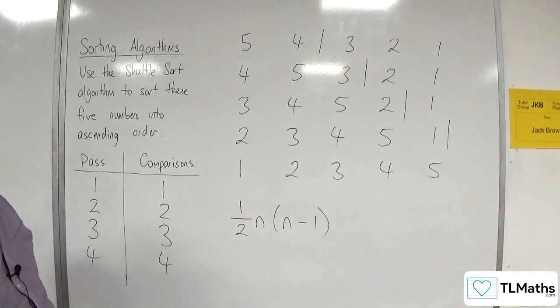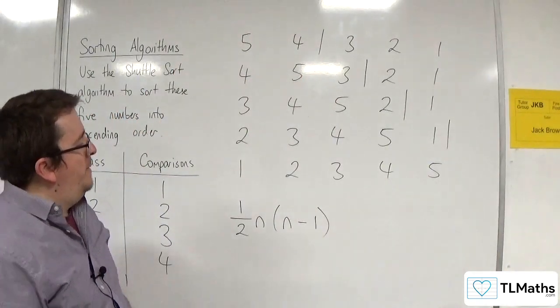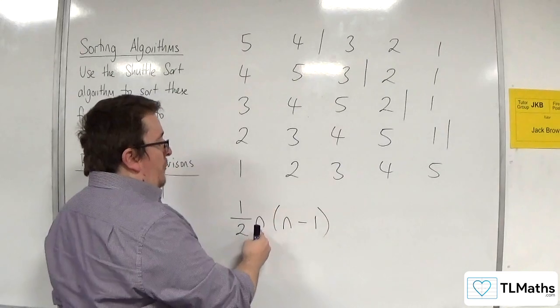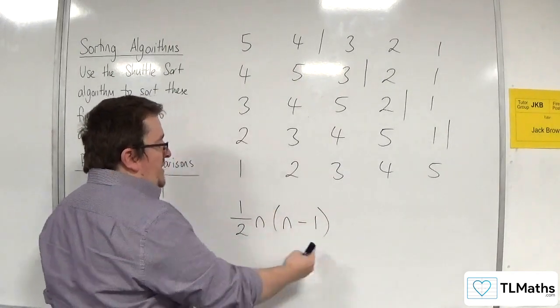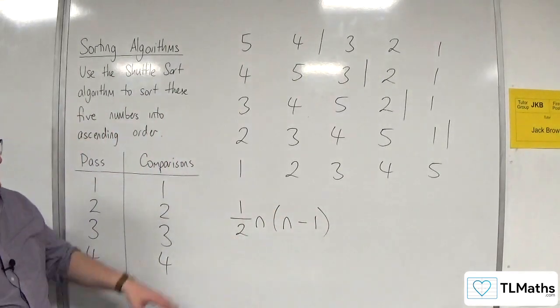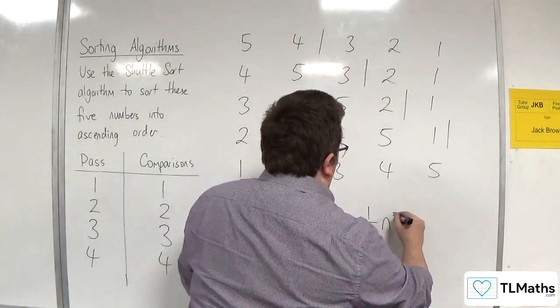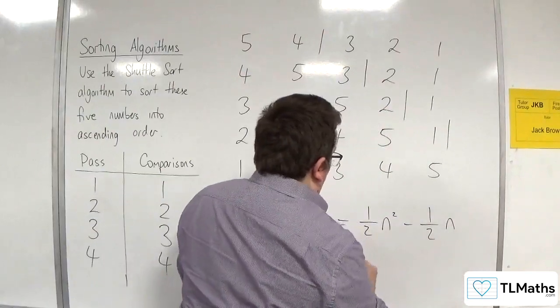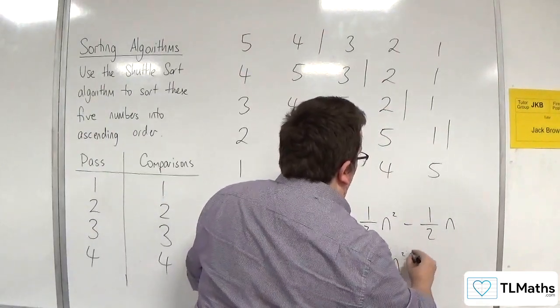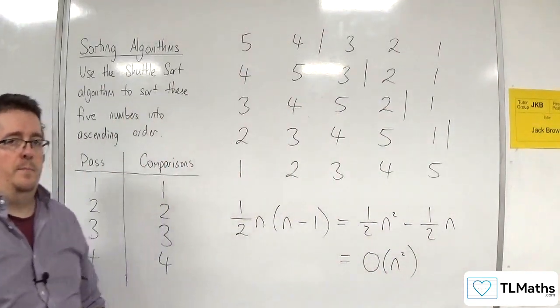So, because we had 5 numbers in the list, the total number of comparisons is 1 half times 5 times 4, which is 10. And when you expand that out, of course, we get 1 half n squared, take away 1 half n, which is order of n squared. So, quadratic complexity.